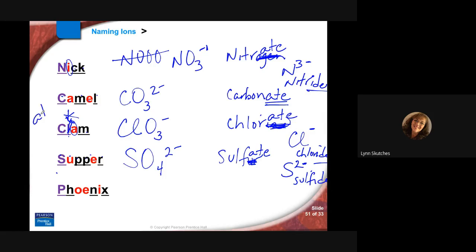Finally, Nick the camel ate a clam for supper in Phoenix. P for phosphorus, and of course you gotta spell Phoenix right. One, two, three, four consonants, so like sulfate it has four oxygens. However, O-E-I, that's three vowels, it has a minus three charge, and that is the phosphate ion. And again, phosphorus can form the phosphide monatomic ion as well.